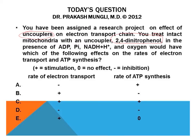Now, what is the effect of 2,4-dinitrophenol or any other uncoupler? Uncouplers increase the flow of protons from the intermembrane space into the matrix side without going through ATP synthase. They create a pore in the inner mitochondrial membrane, allowing the passage of protons from the intermembrane space directly into the matrix.